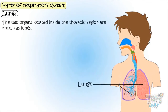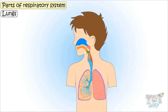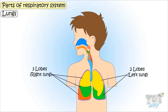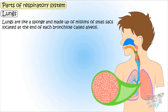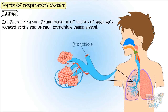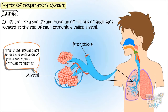Lungs: These two organs located inside the thoracic region are known as lungs. They are surrounded by a membrane that provides them with enough space to expand. The two lungs are not identical — the left lung is smaller and has two lobes, while the right one has three lobes. Lungs are like a sponge and are made up of millions of small sacs called alveoli at the end of each bronchiole. These alveoli are filled with air when we breathe in, and this is where the exchange of gases takes place through capillaries.